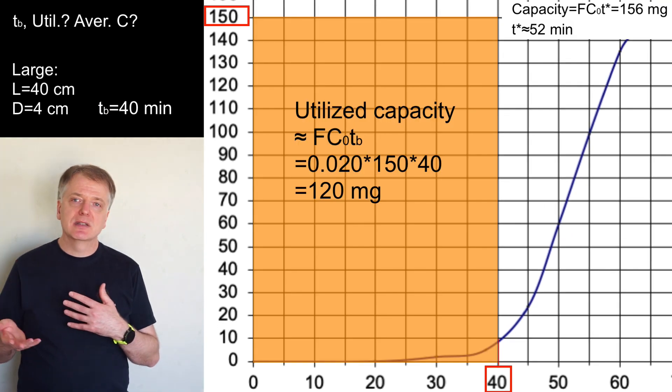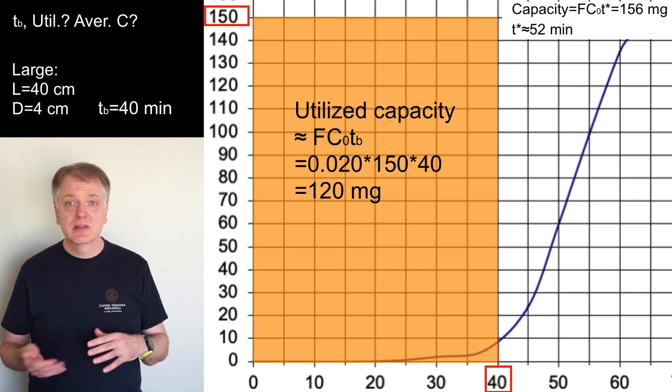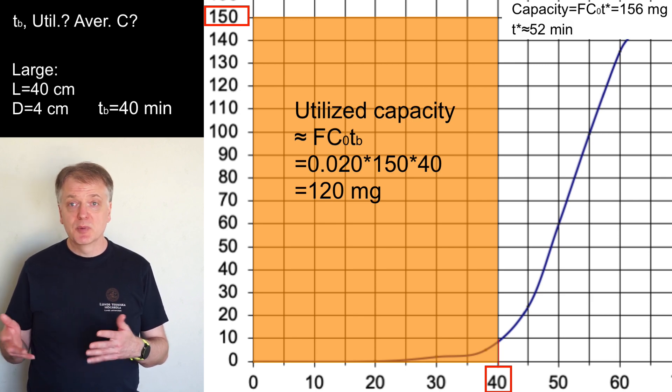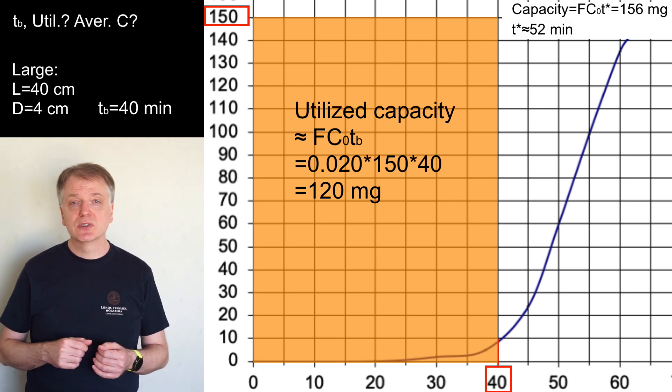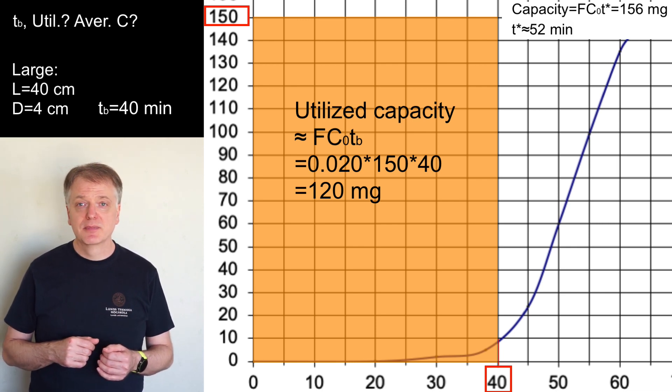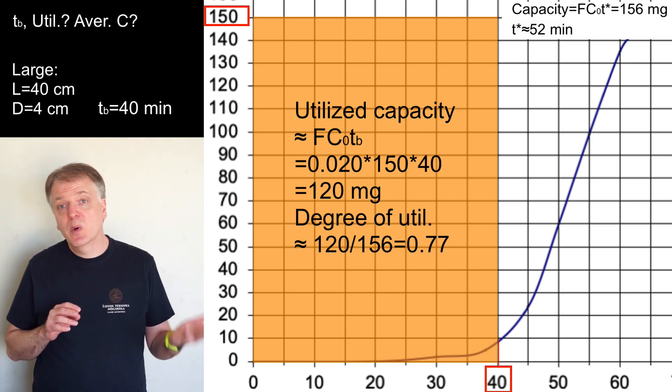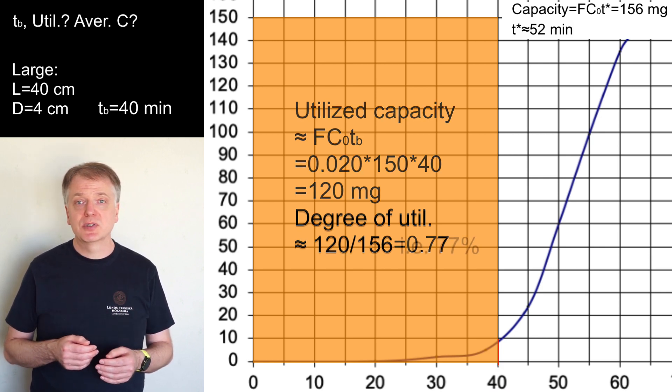The utilized capacity at the breakpoint is approximately F times C0 times TB or 20 times 10 to the power minus 3 liter per minute times 40 times 150 which equals 120 milligram. We get an approximate degree of utilization of 120 divided by 156 which equals 77 percent.